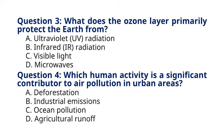Question 4. Which human activity is a significant contributor to air pollution in urban areas? A. Deforestation. B. Industrial emissions. C. Ocean pollution. D. Agricultural runoff. The correct answer to question 4 is option B. Industrial emissions. Explanation: industrial activities release pollutants such as particulate matter, sulfur dioxide, SO2, nitrogen oxides, NOx, and volatile organic compounds, VOCs, contributing to air pollution in urban areas.